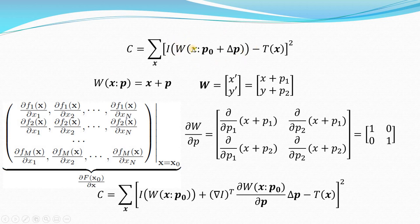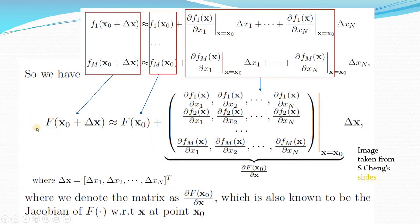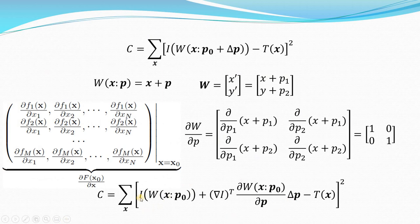Now I apply the Taylor series to the warping inside the cost function. Expanding I(W(X; P + delta P)) by Taylor series gives I(W(X; P)) plus the derivative of I times the derivative of W. Because I is a function of W, I must use the chain rule: first take the derivative of I, then the derivative of W with respect to P. This term corresponds to the Jacobian matrix of W.